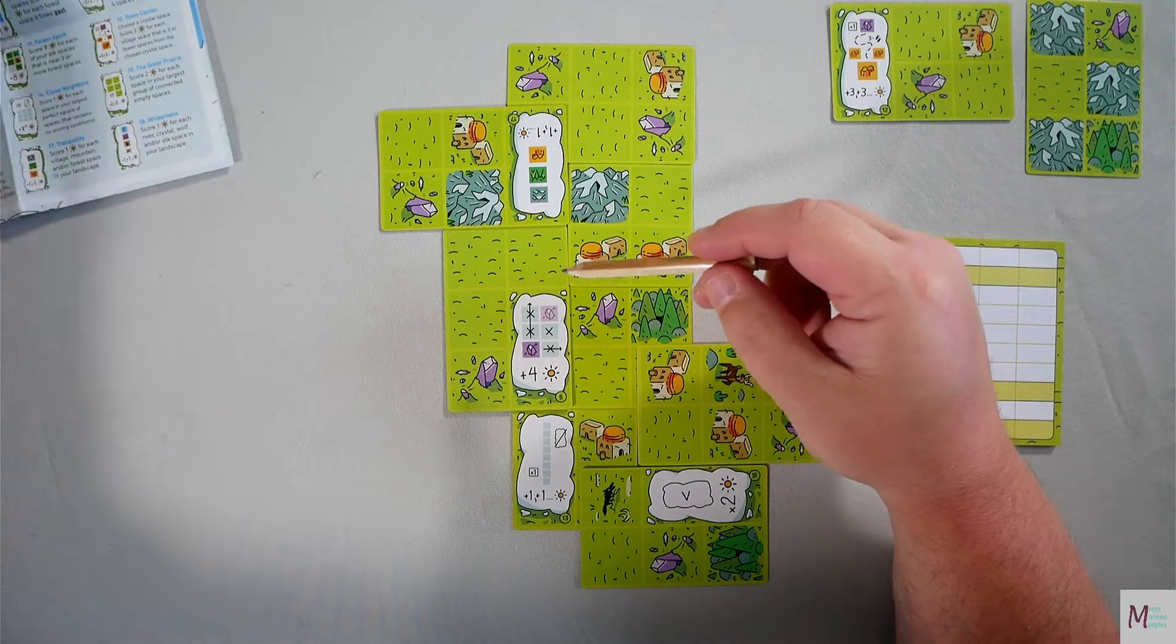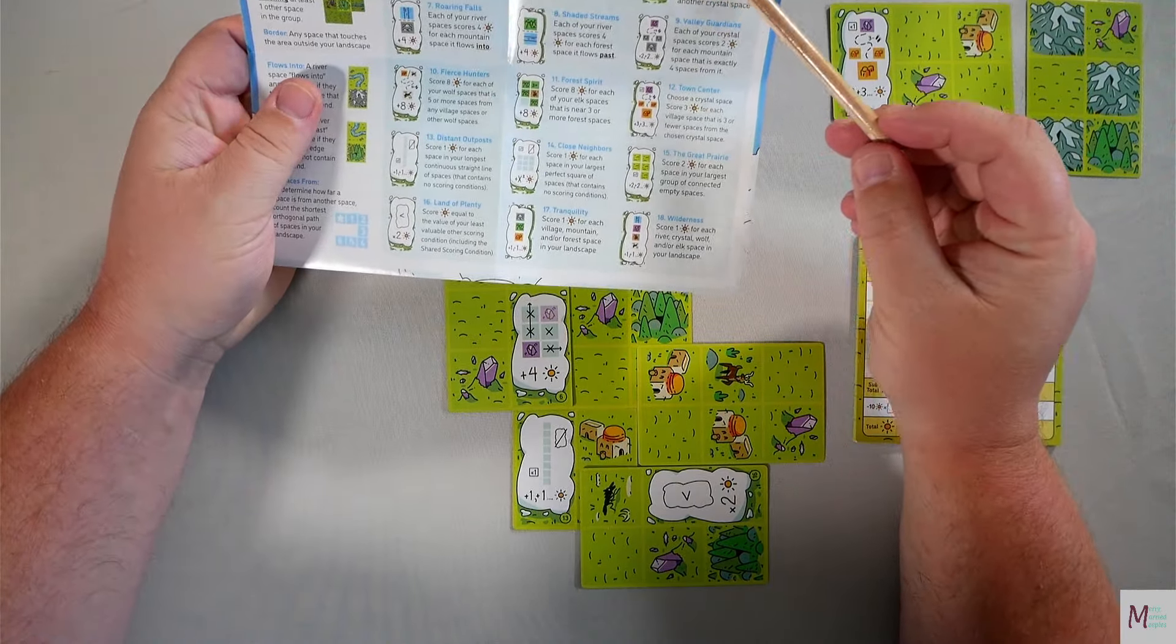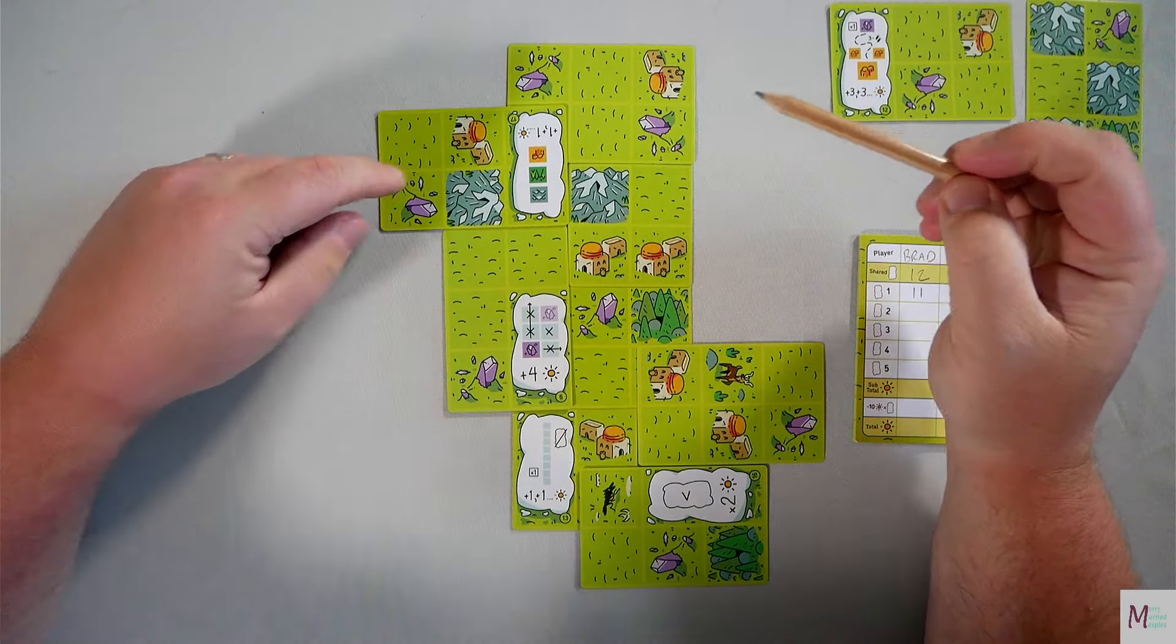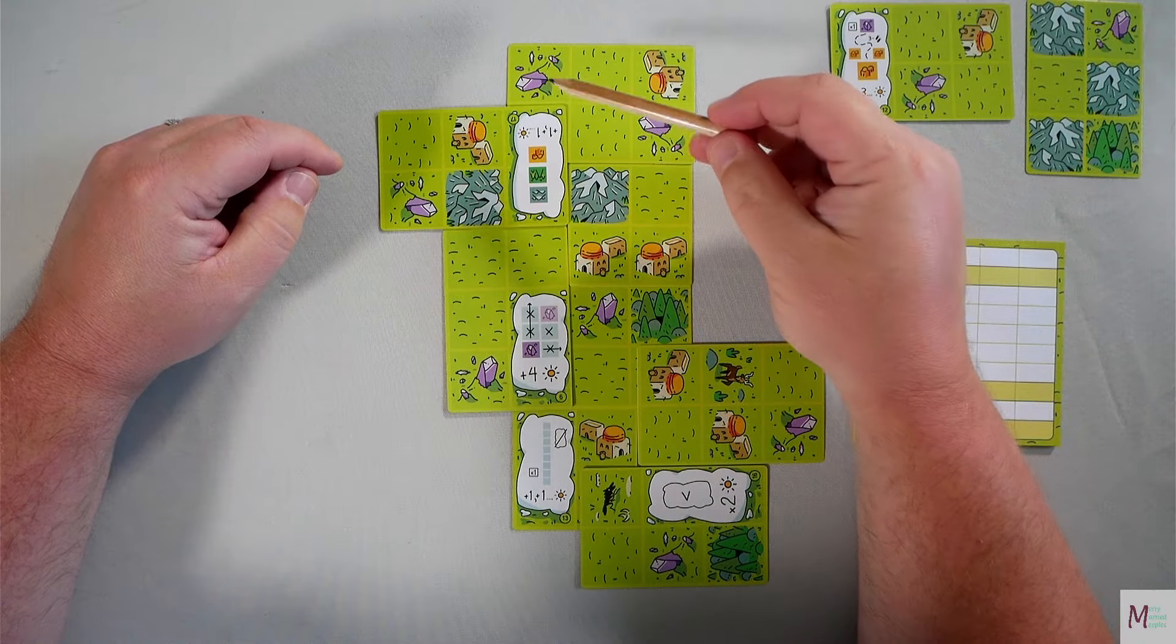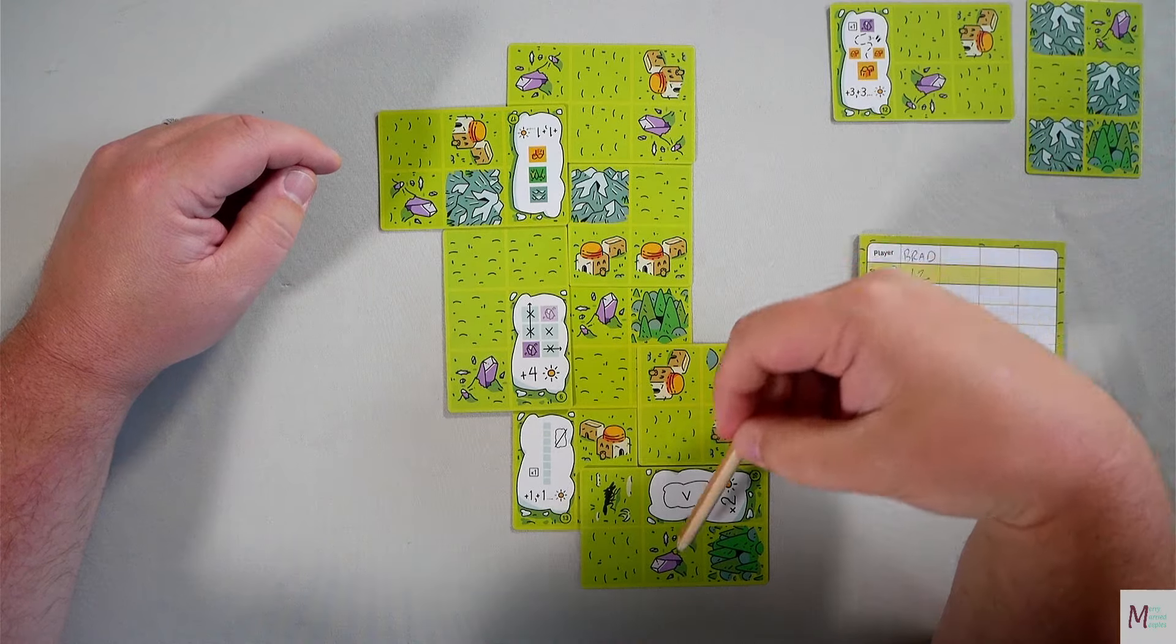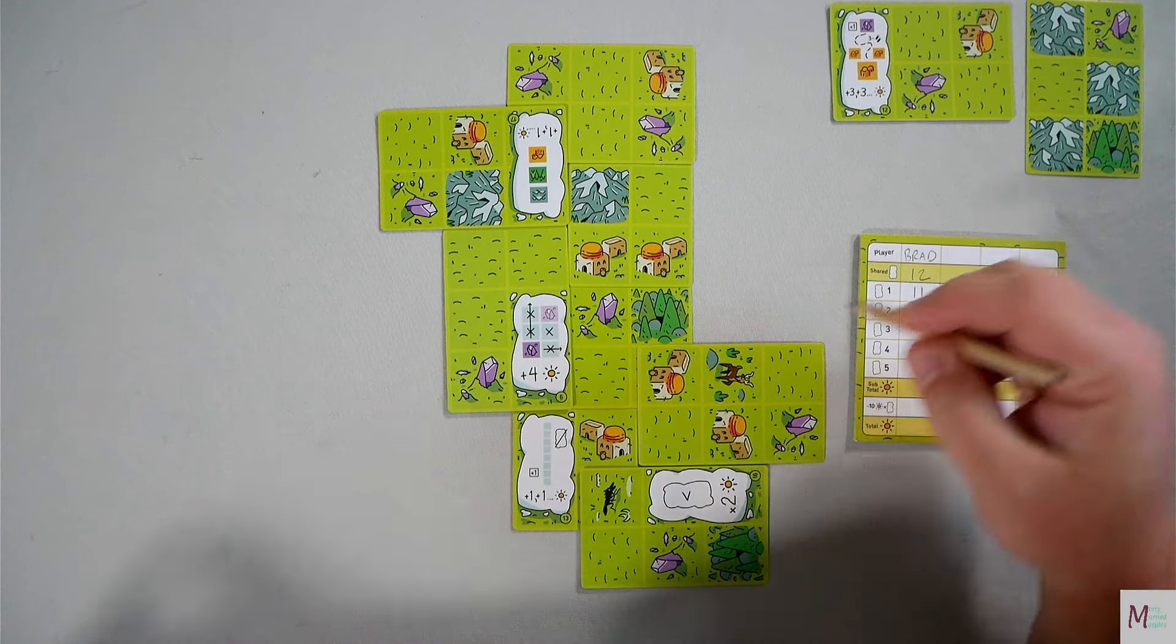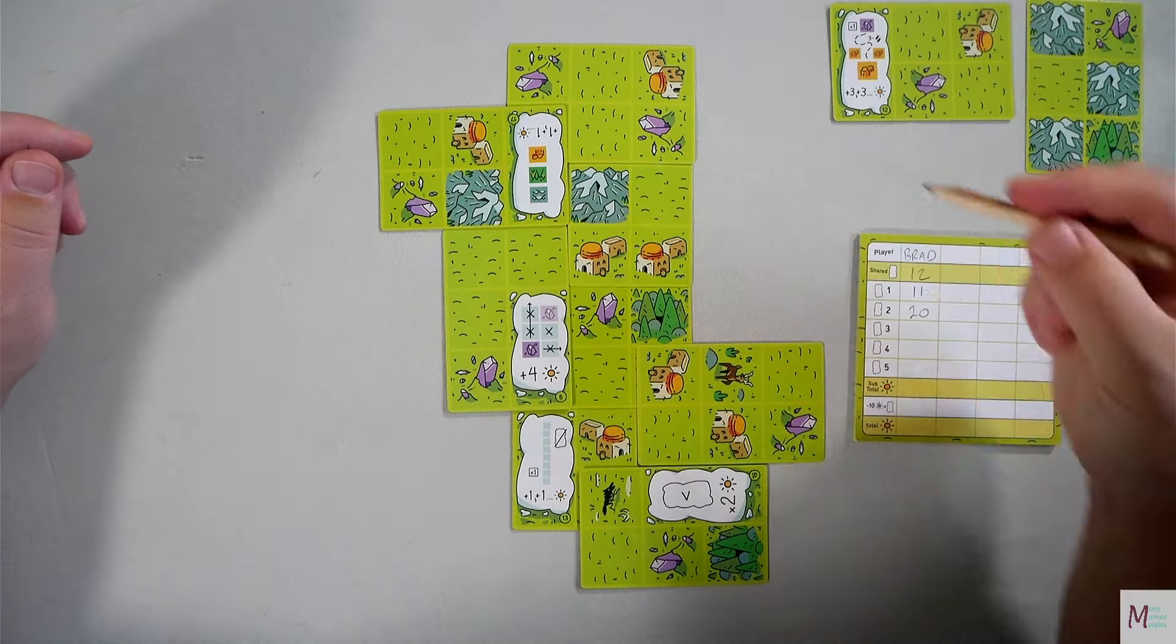So this is looking at the crystals. Score four points for each crystal space that's neither near nor in the same row column as another crystal space. So that's one, two, three, four, five of those. So that's 20 points. One, two, three, four, five, six, seven, eight, nine.